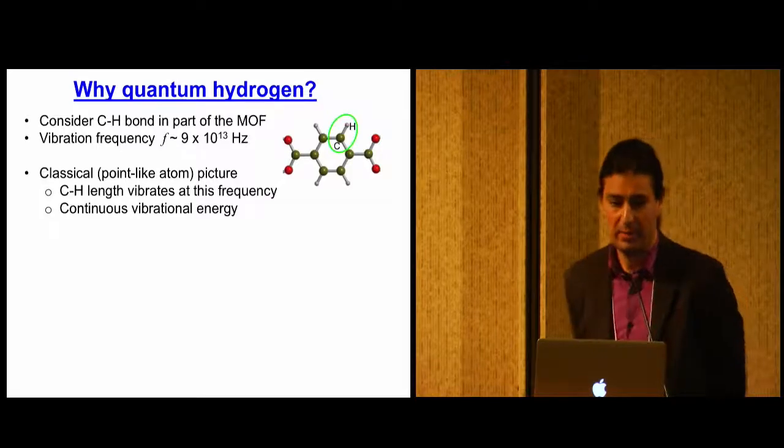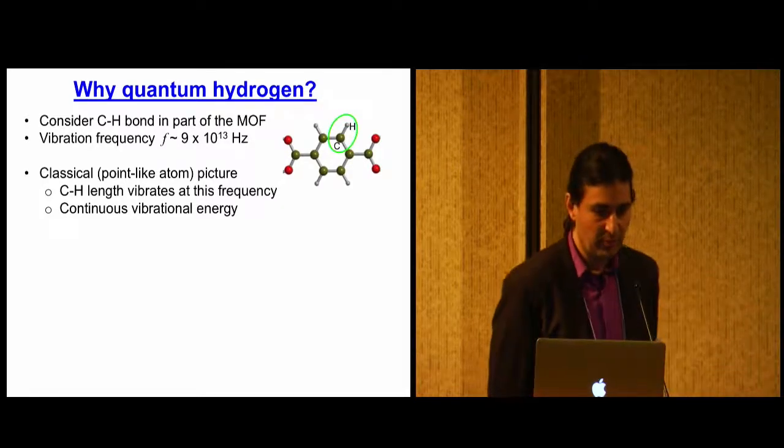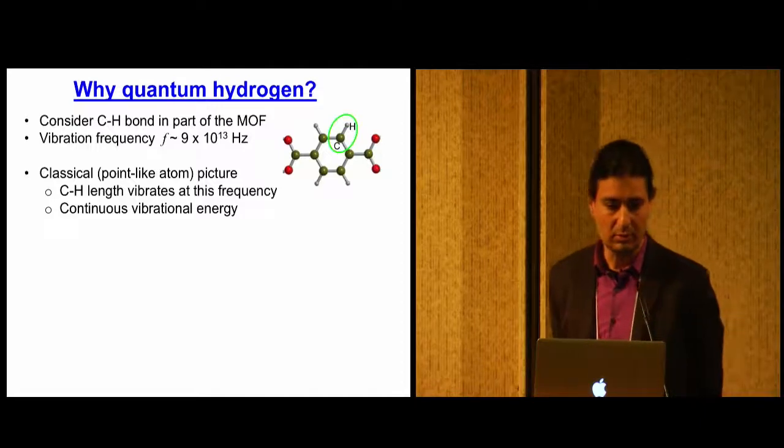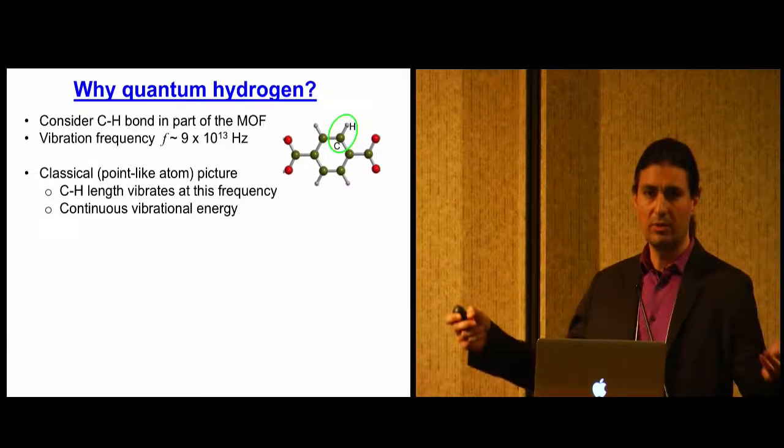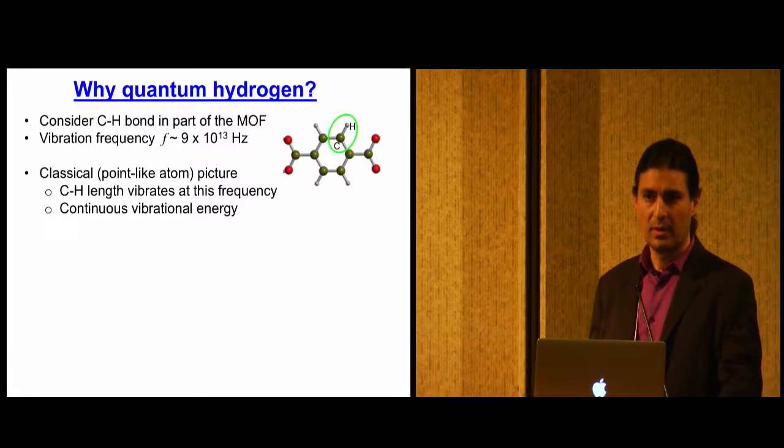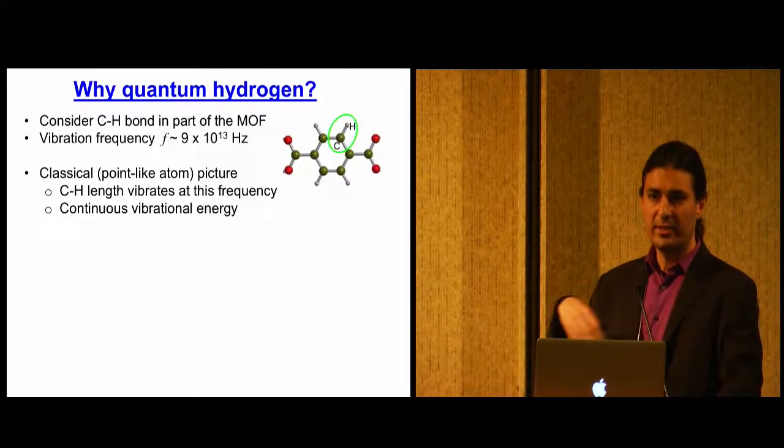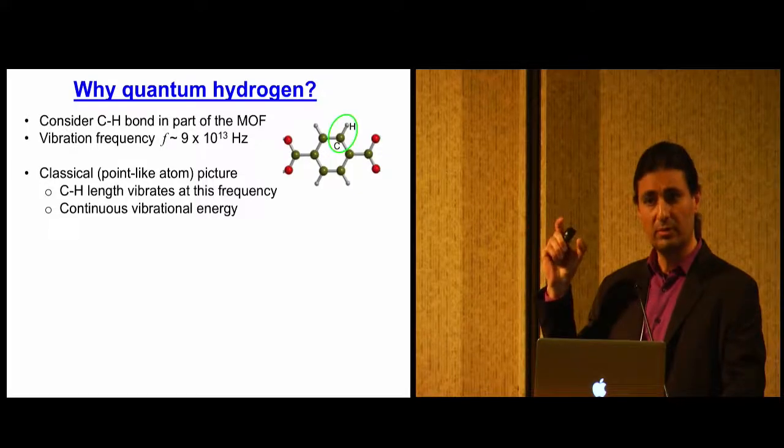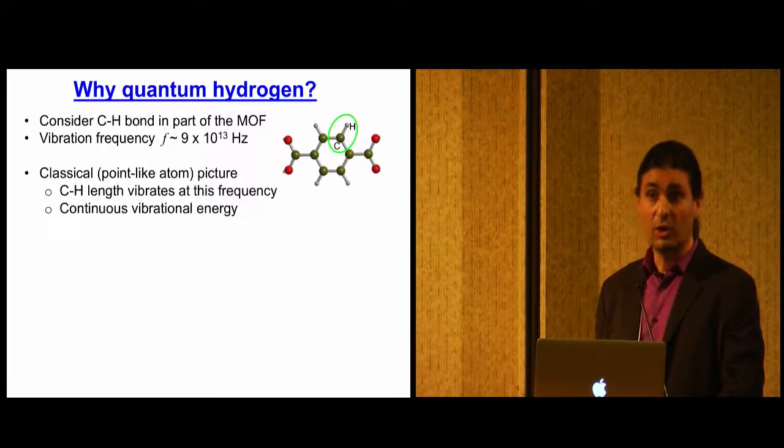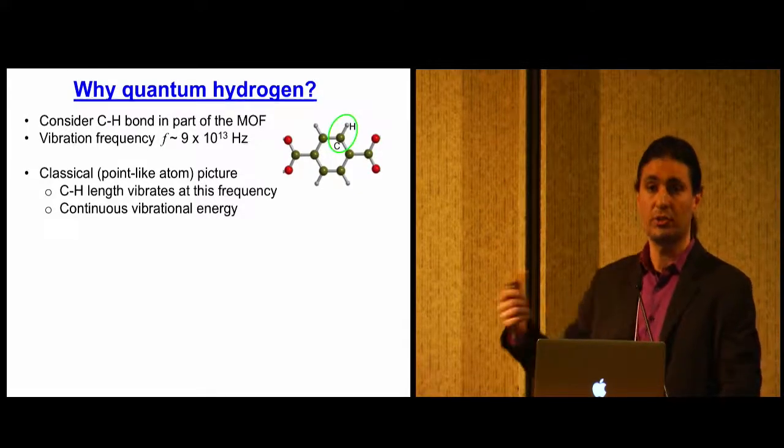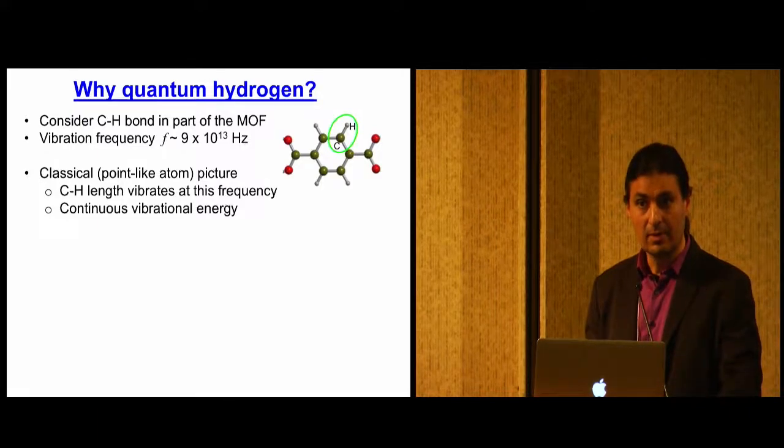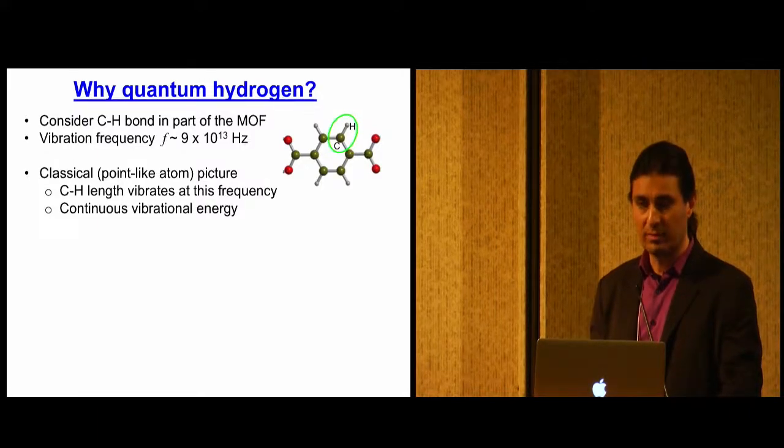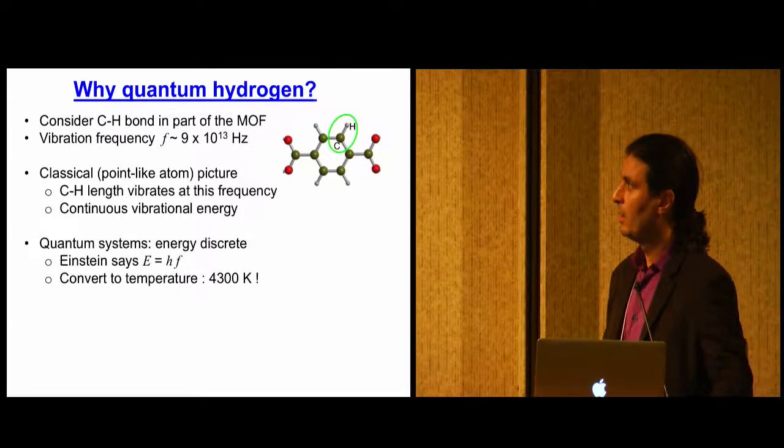So in the classical point light picture, this bond length vibrates, and you can have lots of vibration, or a small amount of vibration, it's a continuous amount of energy. More importantly, as the rest of the system transfers energy in and out of that bond, the amplitude of this vibration changes. And if your other hydrogens are around, they can either get jostled by that, and that'll change how they diffuse. The question is, does this have any resemblance to reality?